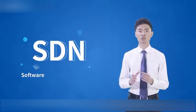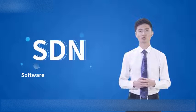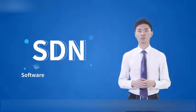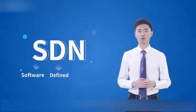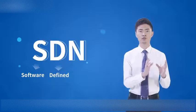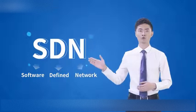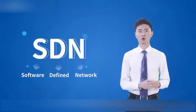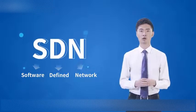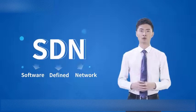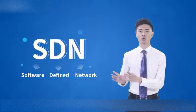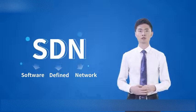The S for software is usually understood as a centrally deployed network controller, though some claim that it refers to the upper layer service applications. D for defined has had its meaning extended to influenced or controlled. And N for network is sometimes defined as network forwarding, sometimes as network configuration provisioning, and sometimes as network security policy.